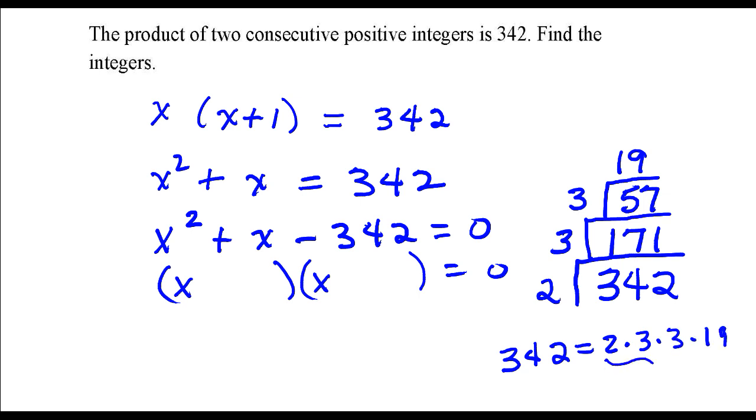So if I multiply these three numbers together, that's 2 times 3 times 3, that's 18. So 18 times 19 is 342.